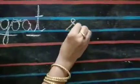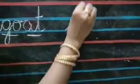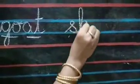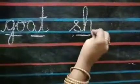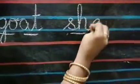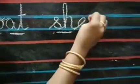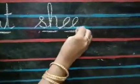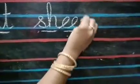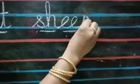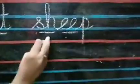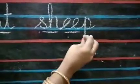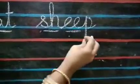Sound of S and H is shh. Sound of E is ee. Sound of P is p. Shh, eep — sheep.